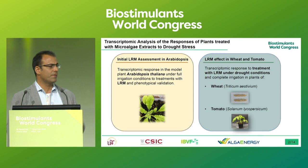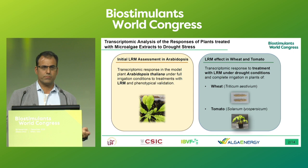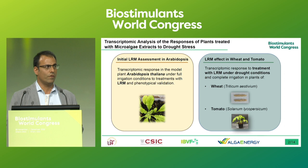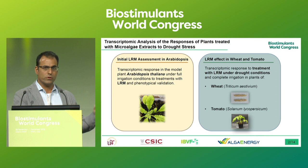We developed a protocol divided into two different phases. First, we started working with Arabidopsis thaliana because it's a model plant that is very well characterized and we have lots of tools to analyze gene expression. Once we identified the biological processes significantly activated in this plant as a consequence of the foliar application of the biostimulant LRM, we moved to plants of agronomical interest — wheat and tomato — to explore whether these processes are also activated in these two plants.